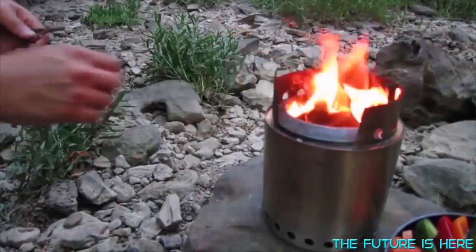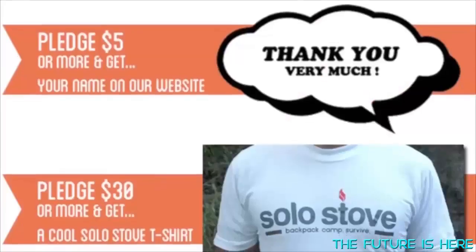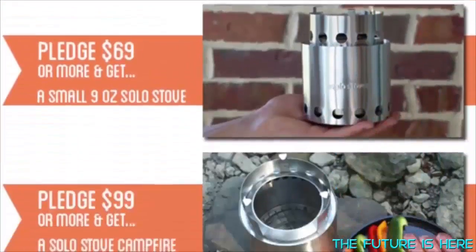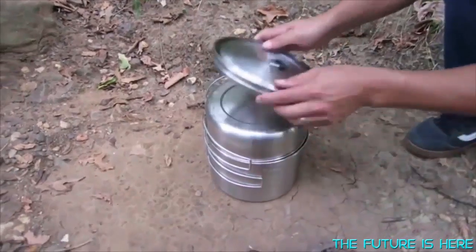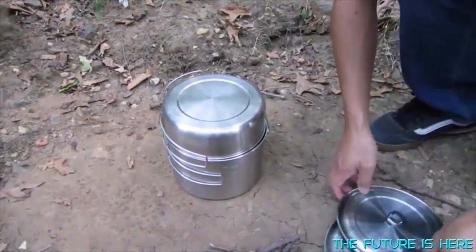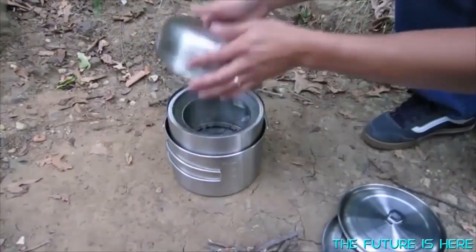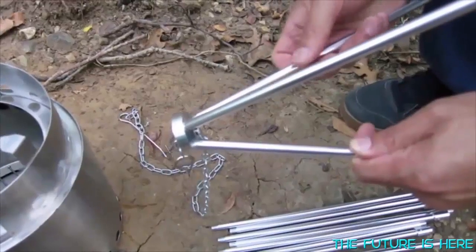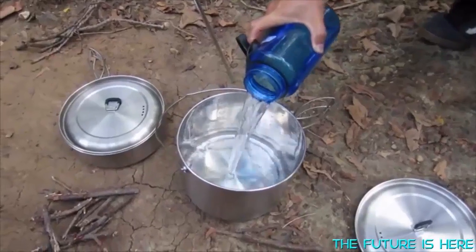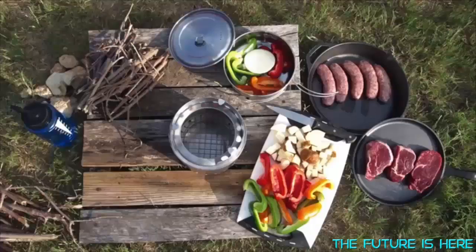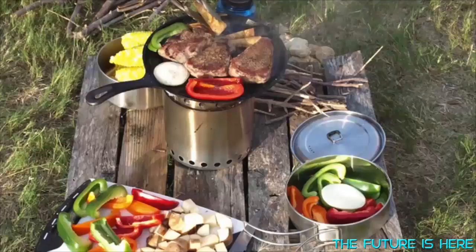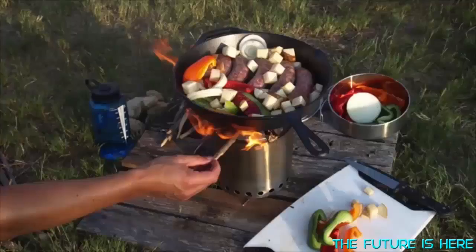We have awesome rewards at all levels, including a custom cooking set just for the Solo Stove Campfire. The cooking set comes with two stainless steel pots which the Solo Stove Campfire can nest in for easy packing and storage. It also includes a compact aluminum tripod for cooking soups and stews. Become a backer and be the first to experience the Solo Stove Campfire.